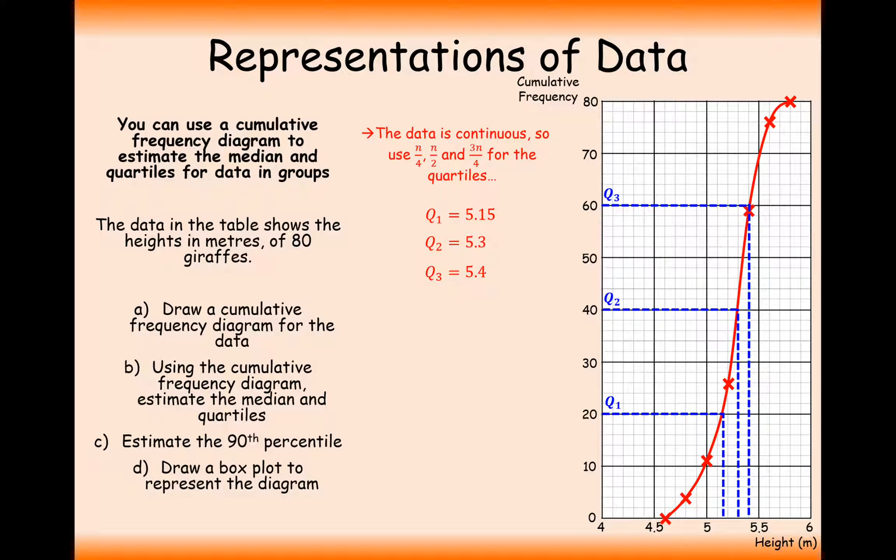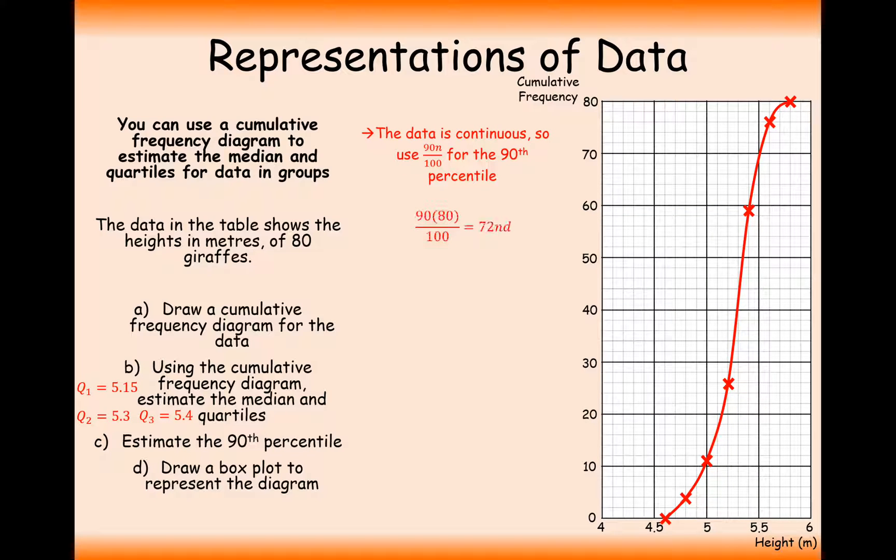So we can also extend this down to a box plot diagram, which I'll show you in a second. C is use this to estimate the 90th percentile. Well, first we'd have to work out 90% of 80, and that would give us the 72nd giraffe. So draw a line horizontally across from the 72nd giraffe and down. So we get 5.55.